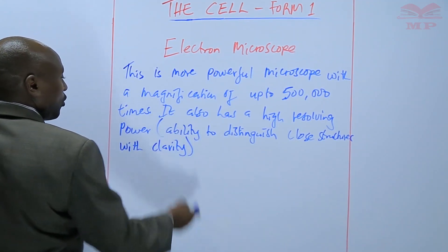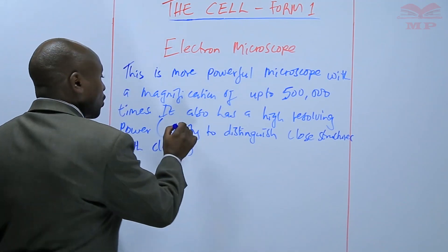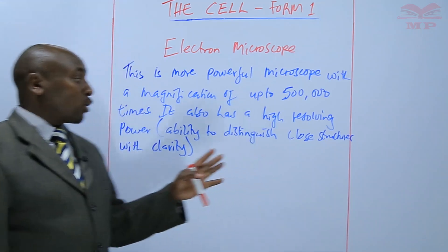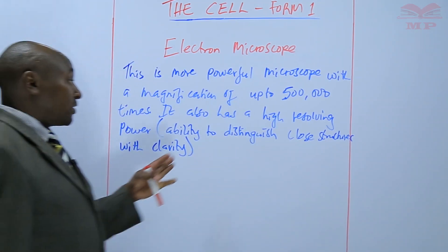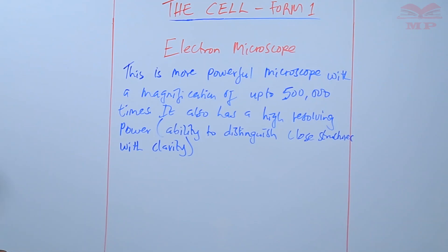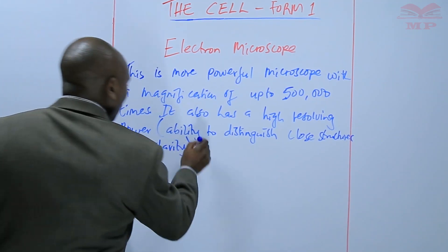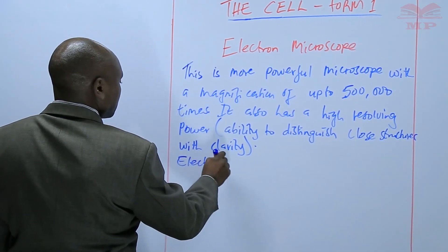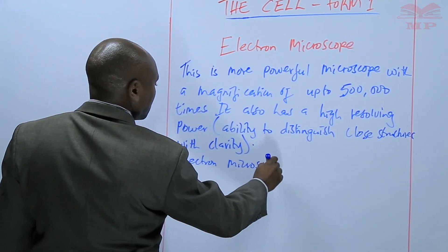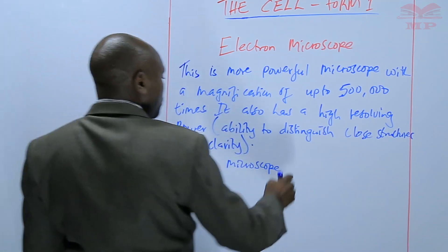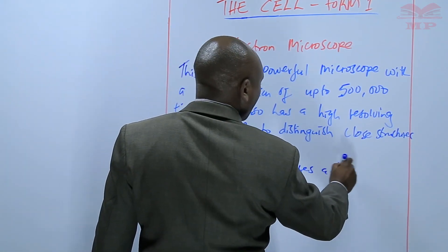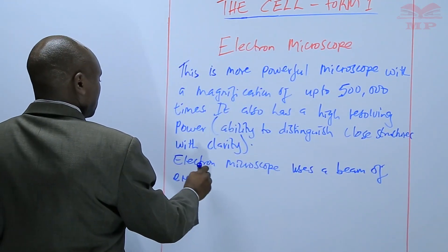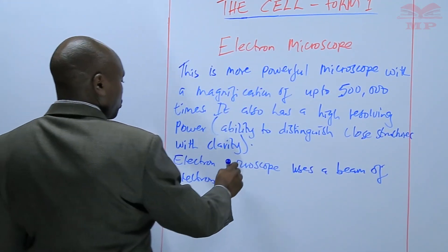The electron microscope has a higher ability to distinguish close objects or close structures with clarity compared to a light microscope. We have also stated that the electron microscope uses a beam of electrons to illuminate the specimen.